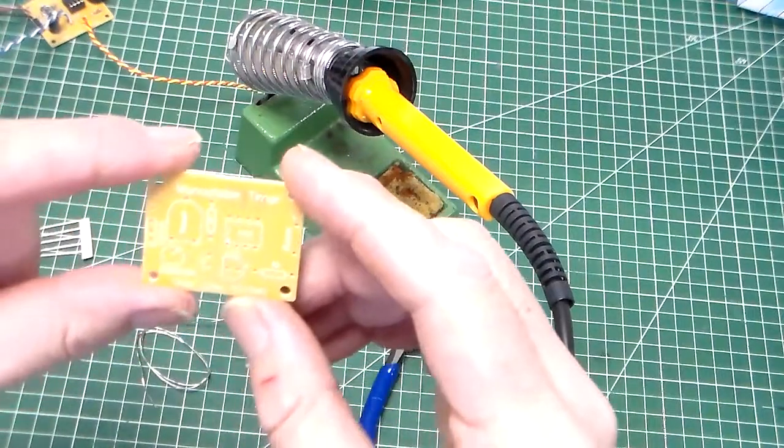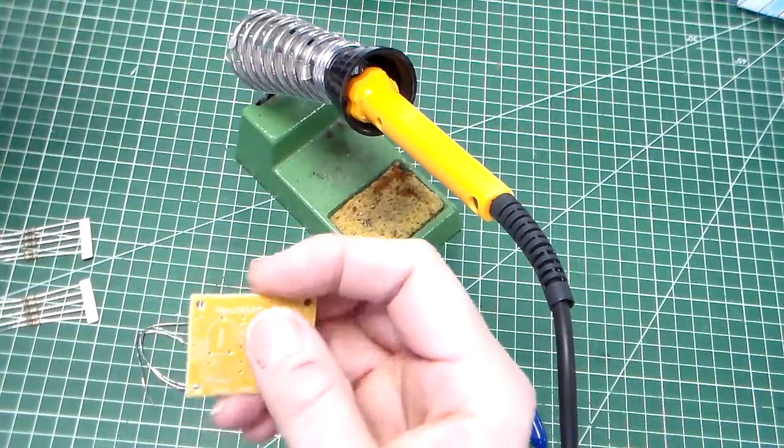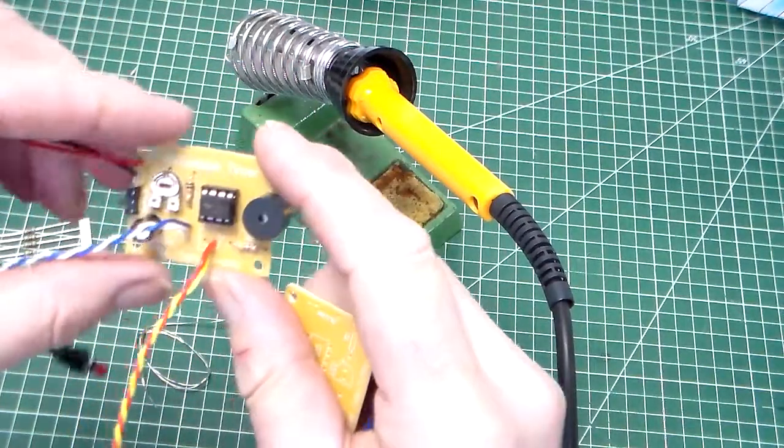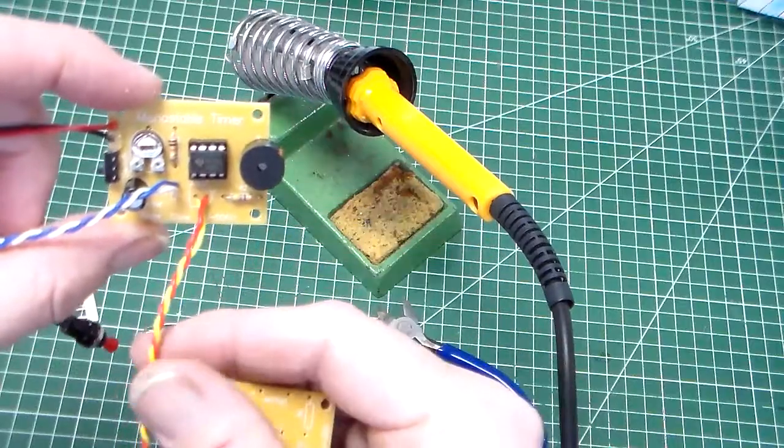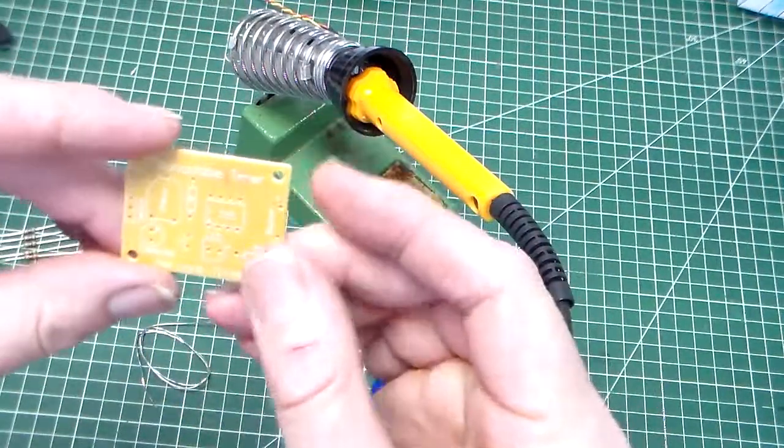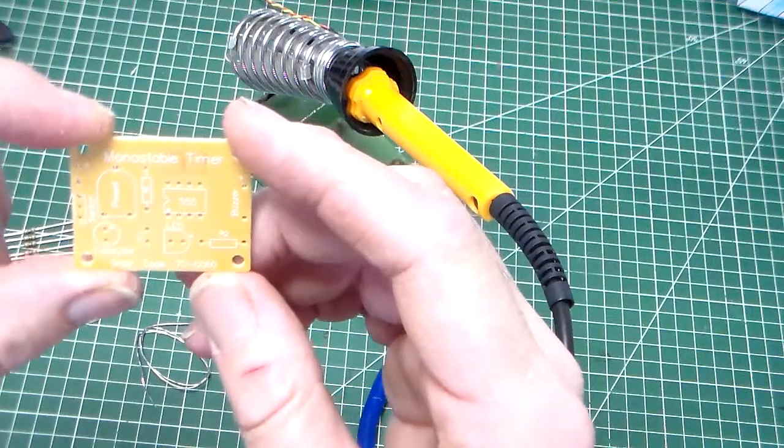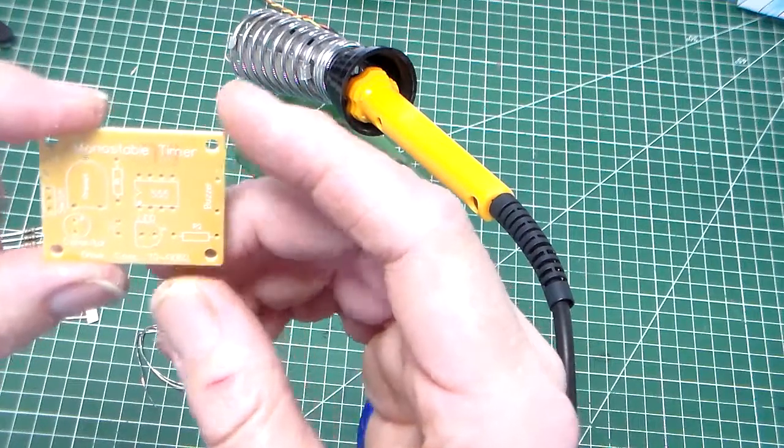Okay, we're going to have a look at the first stage of building a 555 timer circuit. There's the completed circuit here. We've got the circuit board and what we're going to fit first of all is two resistors.